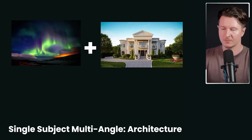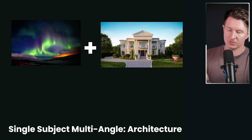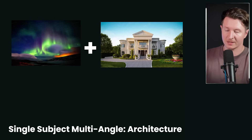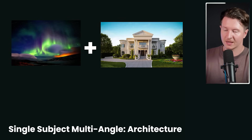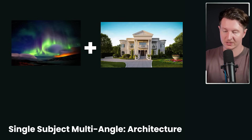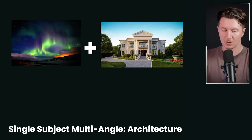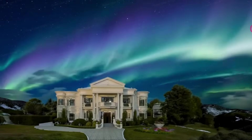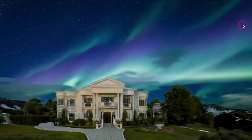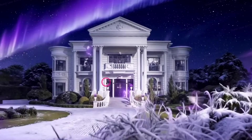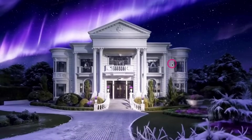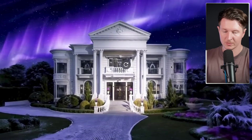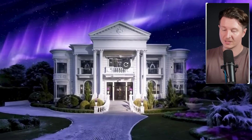We can also get creative by merging diverse elements together with the multi-image input. For example, we can put in a building and also a scenic environment — here we are combining a building with the northern lights. You can see two variations with two different colored northern lights: beautiful blue and green northern lights above this building, and by changing the input image we get a completely different color palette. But both maintain consistency and complement the original input images.